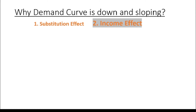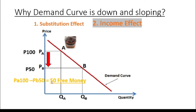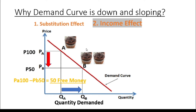Let's say the price of your favorite cupcake is now 50 pesos, down from 100 pesos. The decrease in the price of the cupcake increases the amount of money left from your paycheck by 50 pesos. That amount is now called free money, which you can use to buy more cupcakes or something else — which in effect means your quantity demanded for cupcakes is up.